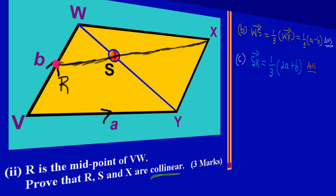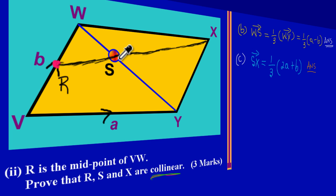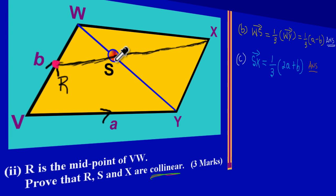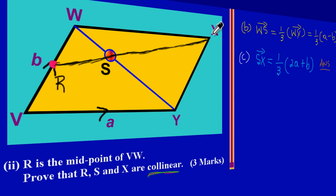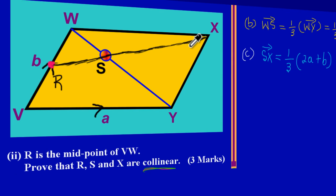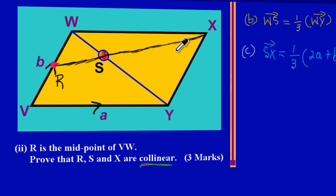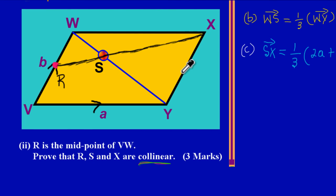Another quick point to note: if they are collinear, meaning they lie on the straight line, the distance from R to S would simply be a multiplier of the distance from S to X. That's just another way of expressing it, and I want you to be familiar with the terms.